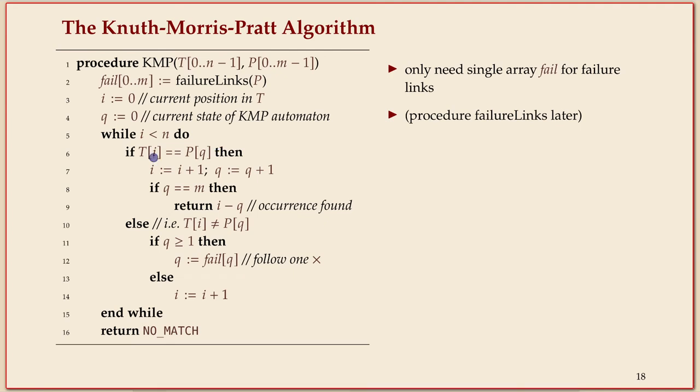As long as we haven't read the entire text, we check if we can follow the match edge, which is: is the current position in the text matching the next in the pattern? If that's the case we follow the match edge which means we move i one step further so we go to the next position in the text and we also increment the state in the automaton. That's the easy case.